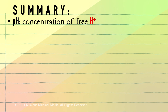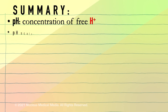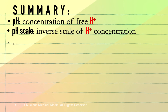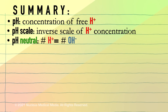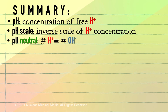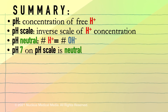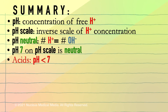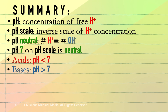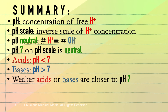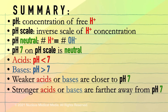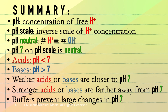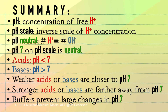In summary, pH is a measure of the concentration of free hydrogen ions in a solution. A pH scale is an inverse scale of hydrogen ion concentration from 1 to 14. If the hydrogen ion and hydroxide ion concentrations are the same, the solution is pH neutral. A pH of 7 on the pH scale is neutral, and pure water has a pH of 7. Acids have a pH of less than 7, and bases have a pH of greater than 7. The closer to 7 a solution is, the weaker the acid or base. The farther away from 7 a solution is, the stronger the acid or base. A buffer is a weak acid or base that reacts with a strong acid or base to prevent large changes in pH.